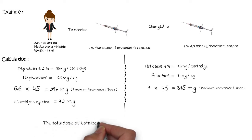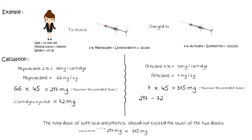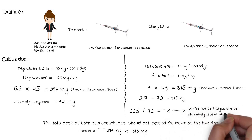The total dose of both local anesthetics should not exceed the lower of the two MRDs. We have 297 mg for mepivacaine and 315 mg for articaine; the lower value is 297 mg, so that is the maximum total local anesthetic this patient can safely receive. Since she has already received 72 mg of mepivacaine, we subtract: 297 minus 72 equals 225 mg remaining. Dividing 225 mg by 72 mg per cartridge of articaine gives approximately 3. So she can safely receive 3 more cartridges of articaine without risk of overdose.